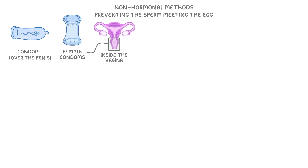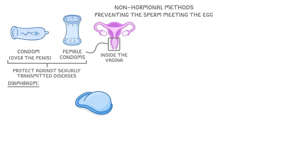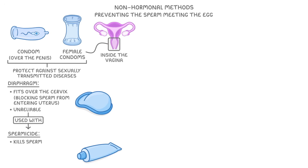Our second group of contraceptives was the non-hormonal methods. What these have in common is that they all work by somehow preventing the sperm from meeting the egg. For example, condoms are worn over the penis, which traps any sperm. There are also female condoms, which are worn inside the vagina, but do basically the same thing. One of the important things about condoms is that they're the only form of contraception that will also protect against sexually transmitted diseases, or STDs. Next, there's the diaphragm, which is a shallow plastic cup that fits over the cervix to block sperm from entering the uterus. Unfortunately it's not that reliable, so it has to be used with spermicide, which is a substance that kills sperm. Spermicides can be used alone as a form of contraception, but they only work around 7 out of 10 times, so they're not really that good.